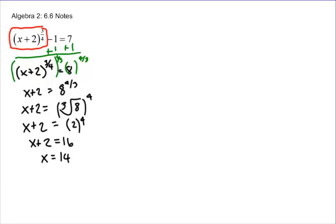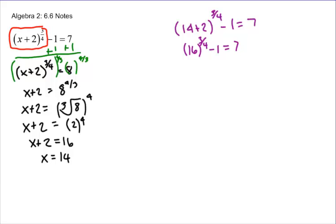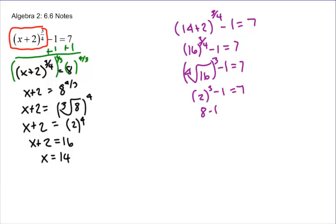Once we get that answer, we check it in the original to make sure it works. Plugging in: 14 plus 2 to the 3/4 minus 1 should equal 7. That gives 16 to the 3/4 minus 1, and 16 to the 3/4 is the same as the 4th root of 16 cubed. The 4th root of 16 is 2 cubed, which is 8, and 8 minus 1 equals 7. ✓